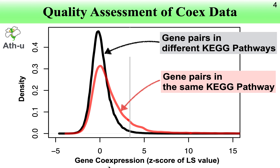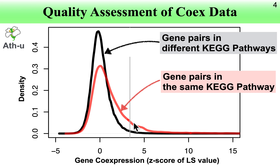The x-axis is gene co-expression degree, where large values indicate strong co-expression and 0 is random co-expression. We have negative gene pairs, derived from different KEGG pathways, and positive gene pairs, derived from the same KEGG pathways. We anticipate that positive gene pairs show stronger gene co-expression, and indeed there is such a tendency in the distribution. The red distribution shows larger gene co-expression values, and the difference between the black distribution of negative gene pairs and the positive gene pairs represents the co-expression quality.